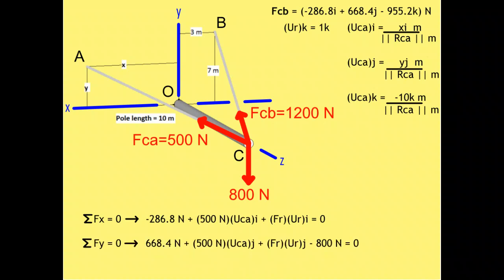For the y direction, we get negative 900.4 newtons from vector FCB's J component, plus 500 newtons times vector UCA's J component, plus the resultant force times vector UR's J component. We subtract the applied load of 800 newtons since it is in the negative y direction, and set all of that equal to zero. For the z direction, we get negative 955.2 newtons from vector FCB's K component, plus 500 newtons times vector UCA's K component, plus the resultant force times vector UR's K component, set equal to zero. The resultant force is only acting in the z direction, therefore vector UR's I and J components are zero.